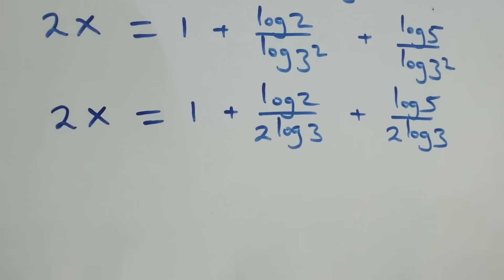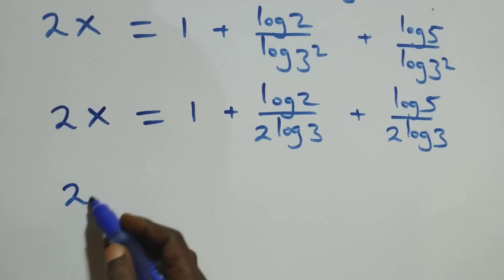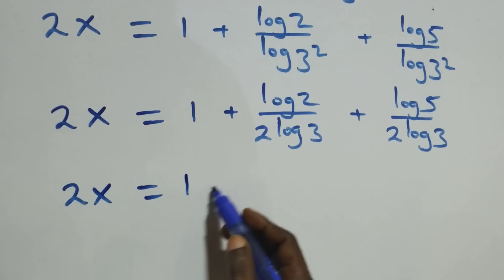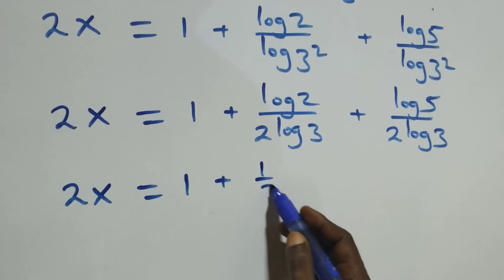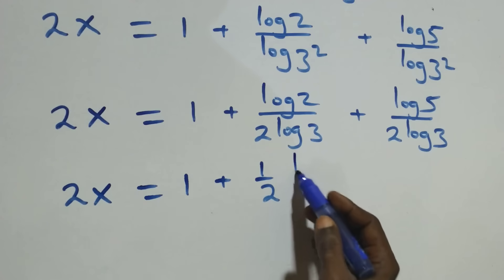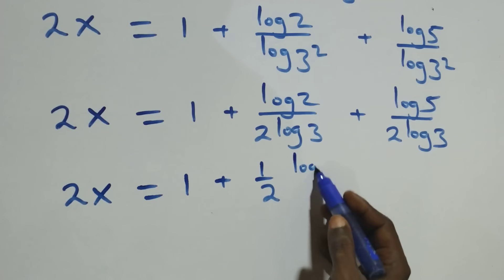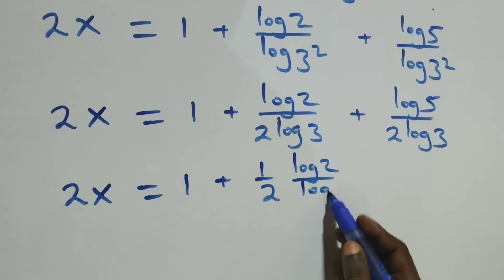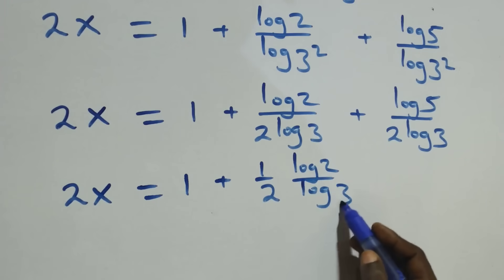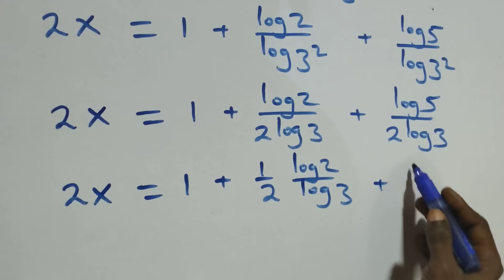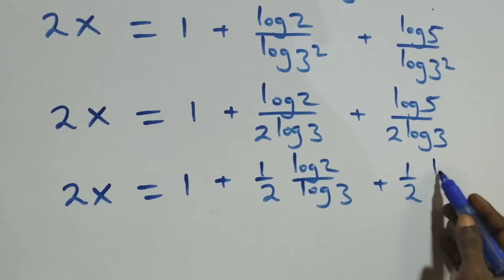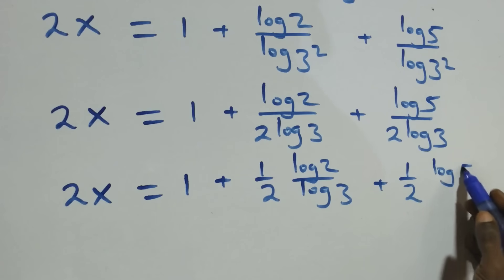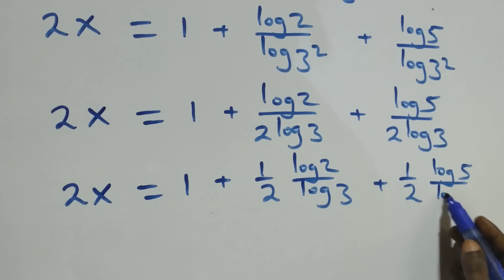We can also write this as 2x equals 1 plus one-half multiplied by log 2 over log 3, plus also one-half multiplied by log 5 over log 3.